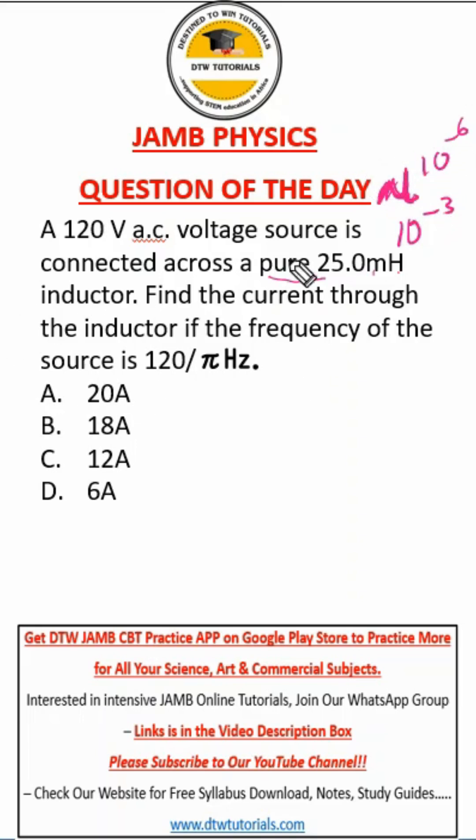Micro is usually written like this. So this is 25 times 10 raised to the power negative three. If the frequency of the source is this, so f is this.